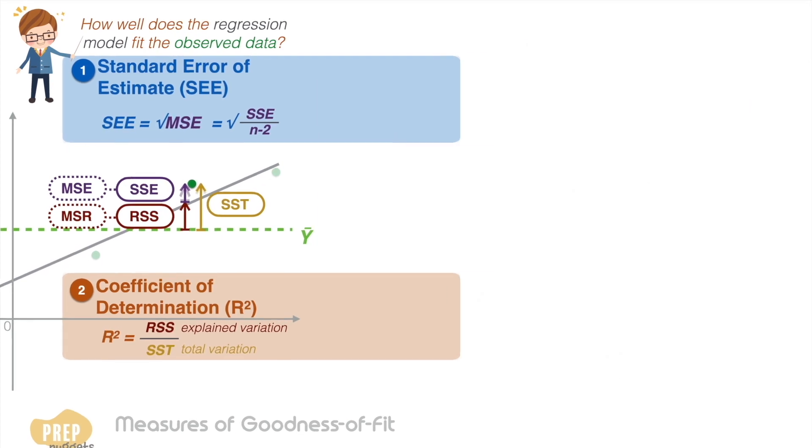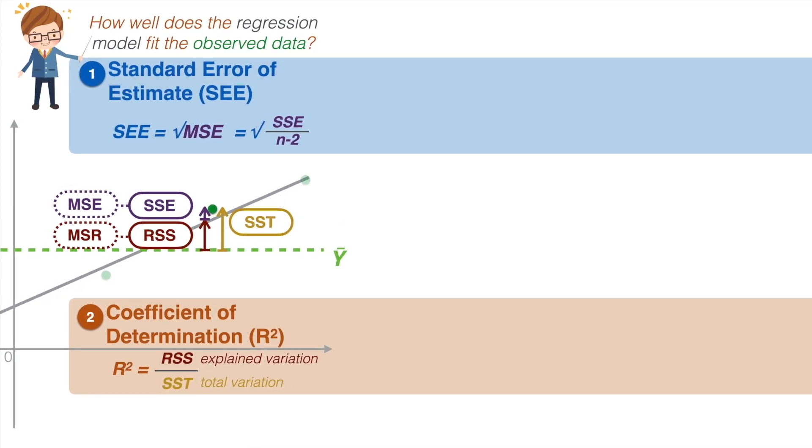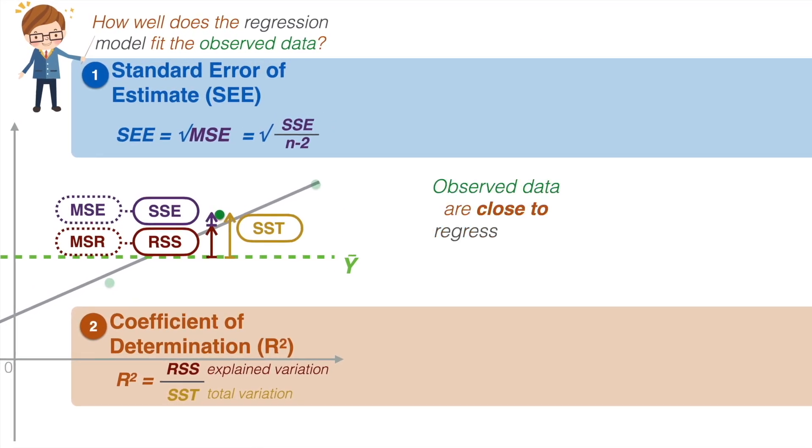The way to interpret the two is this. When the observed data are very close to the regression line, the sum of squared errors will be low, so the SEE is low. In the same vein, the explained variation as a proportion of the total variation is larger, which means the R-squared is high.